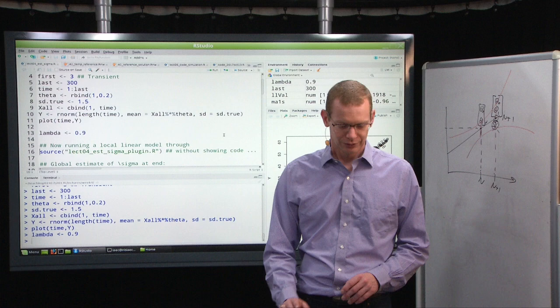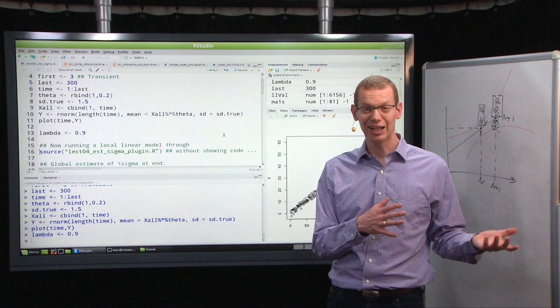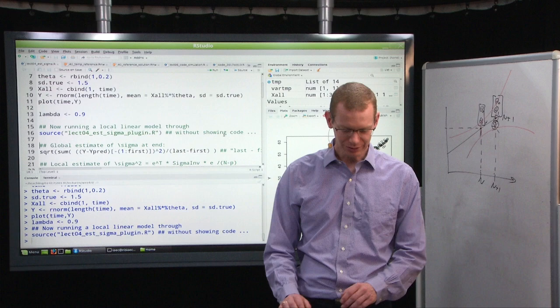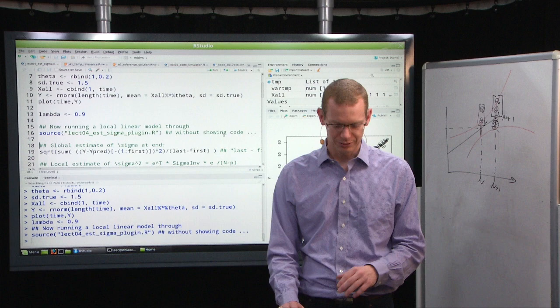Then I will use a lambda for now of 0.9. Since you can say the local linear estimator is part of one of your assignments, then I won't share the exact code I use for that. But I do have it.